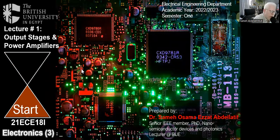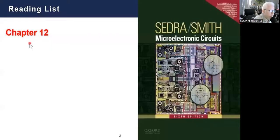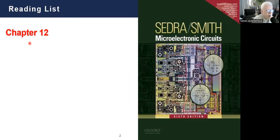As I mentioned, our beginning chapter is Output Stage and Power Amplifiers. You can find this chapter or section typically from Sedra Microelectronics Circuits in Chapter 12. This chapter number may differ whenever you're using a different version; however, you will find it under the same title of Output Stage and Power Amplifier.